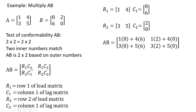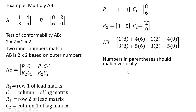R subscript 1 is just 1 and 4, C subscript 1 is 8 and 6, R subscript 2 is 3 and 5, and C subscript 2 is 2 and 0. To calculate A times B, we do a series of row-column vector multiplications. R1 times C1: 1 times 8 plus 4 times 6 gives the element in row 1, column 1. Row 1, column 2 is 1 times 2 plus 4 times 0. The bottom row: 3 times 8 plus 5 times 6 for row 2 column 1, and 3 times 2 plus 5 times 0. Note the numbers in parentheses should match vertically if you're doing this right.